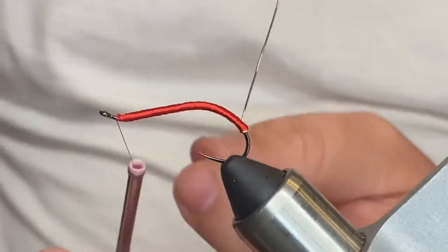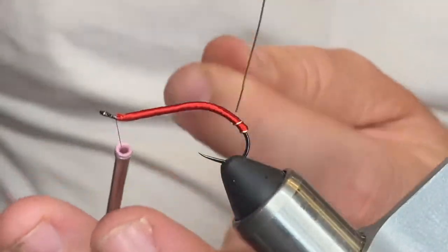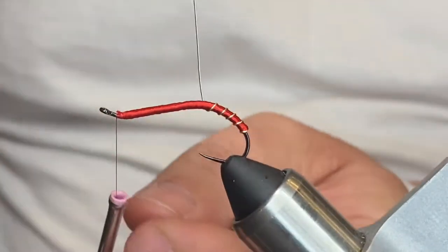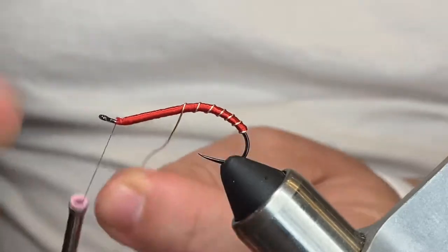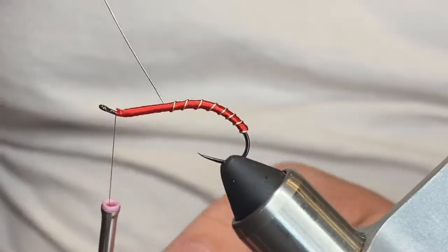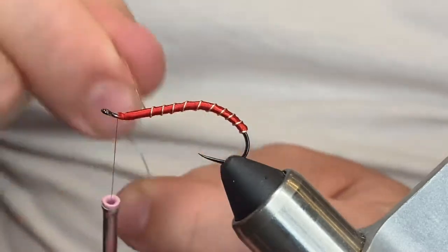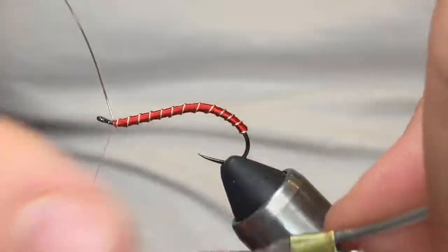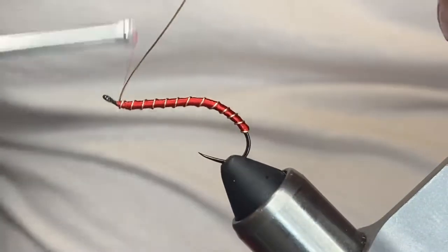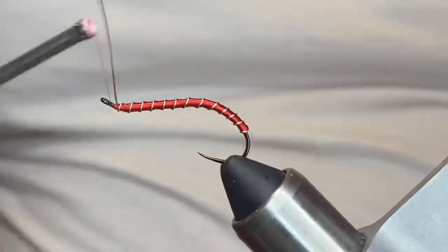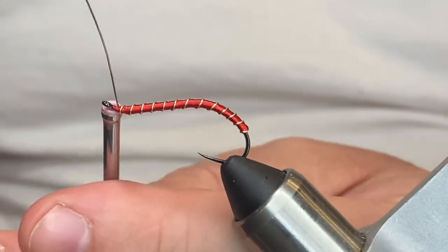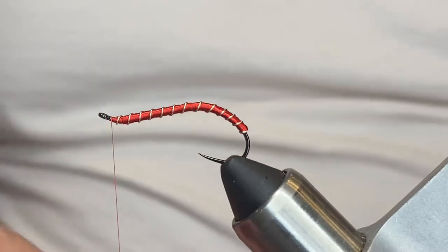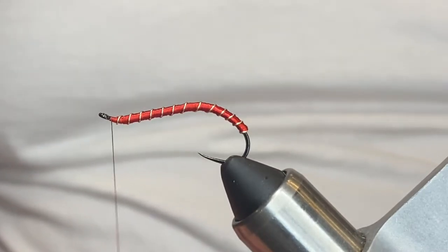And we're going to come in with our rib. Nice spiraling turns—there's no turn count on this, just keep the turns pretty even.